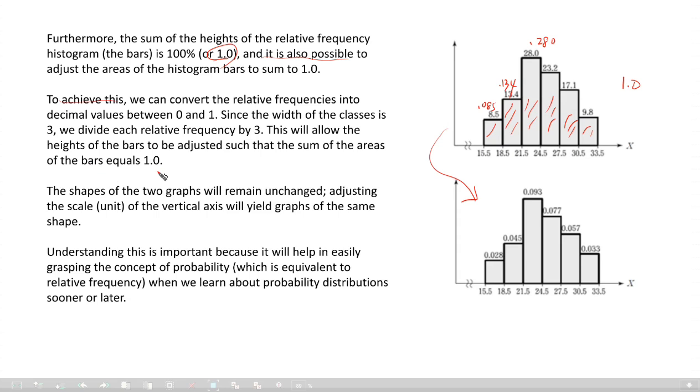Why do I explain this kind of thing? You have to understand the probability distribution function later. It is a very theoretical thing. So I think this helps you understand why and how the probability distribution function can be defined. The shapes of the two graphs will remain unchanged because I change the scale of the vertical axis. Understanding this is important because it will help you in easily grasping the concept of probability, which is equivalent to relative frequencies, when we learn about probability distribution functions sooner or later.